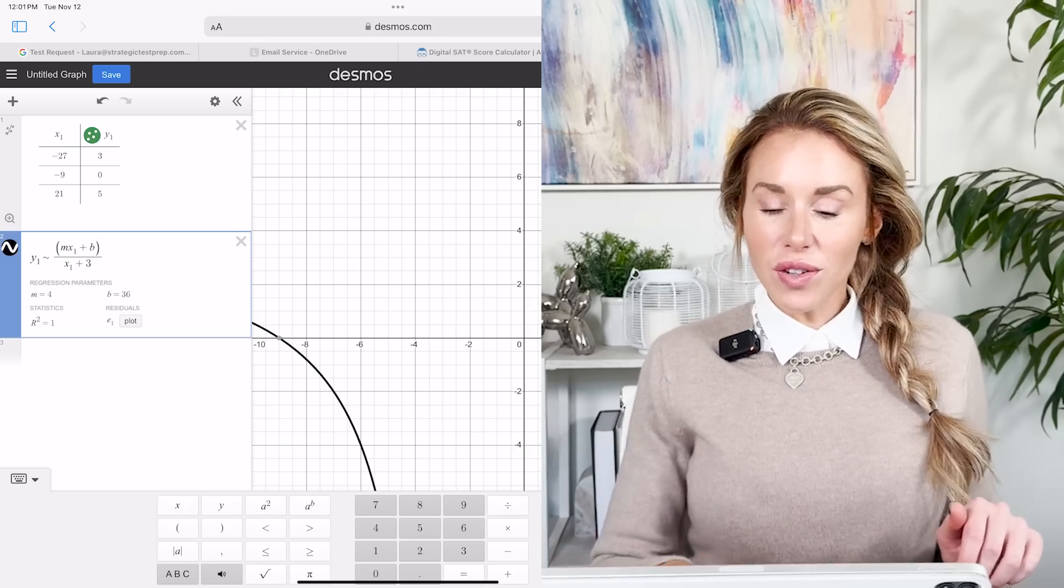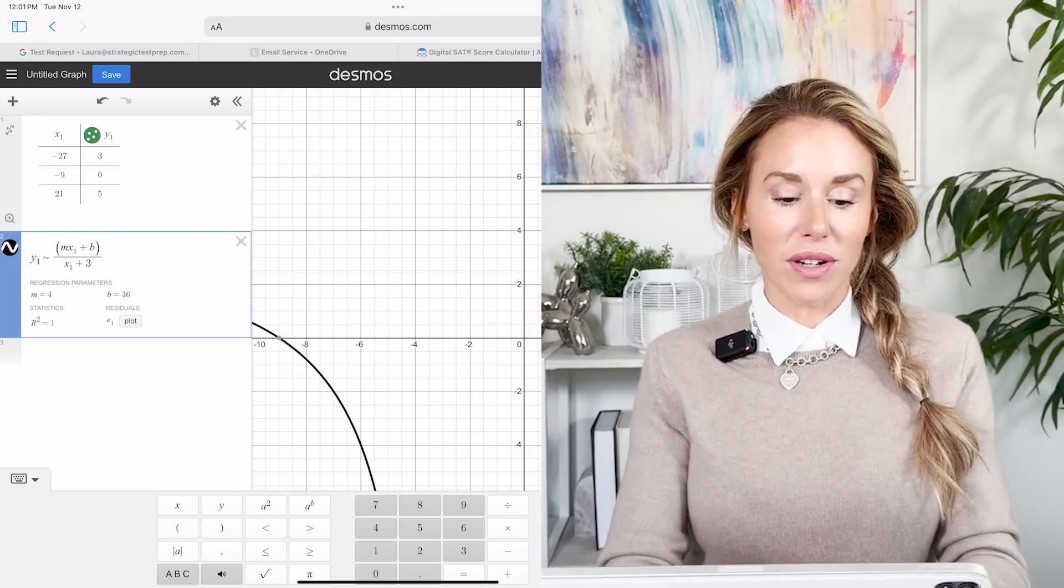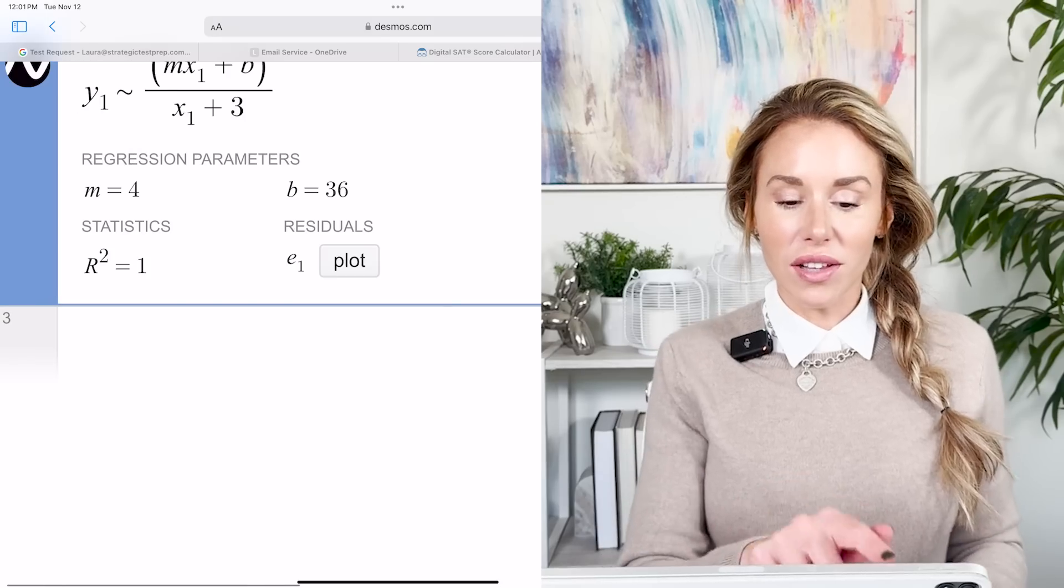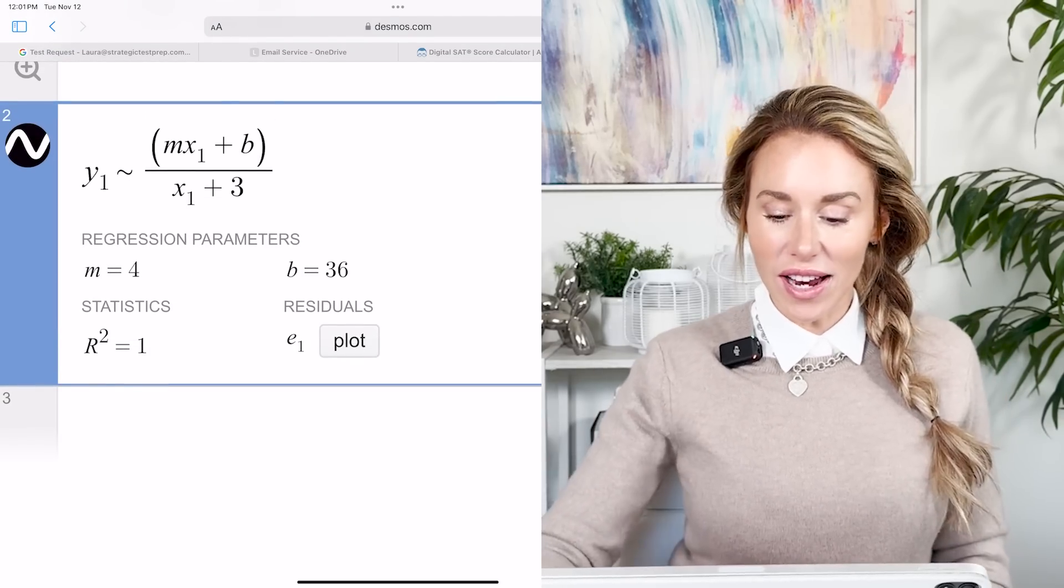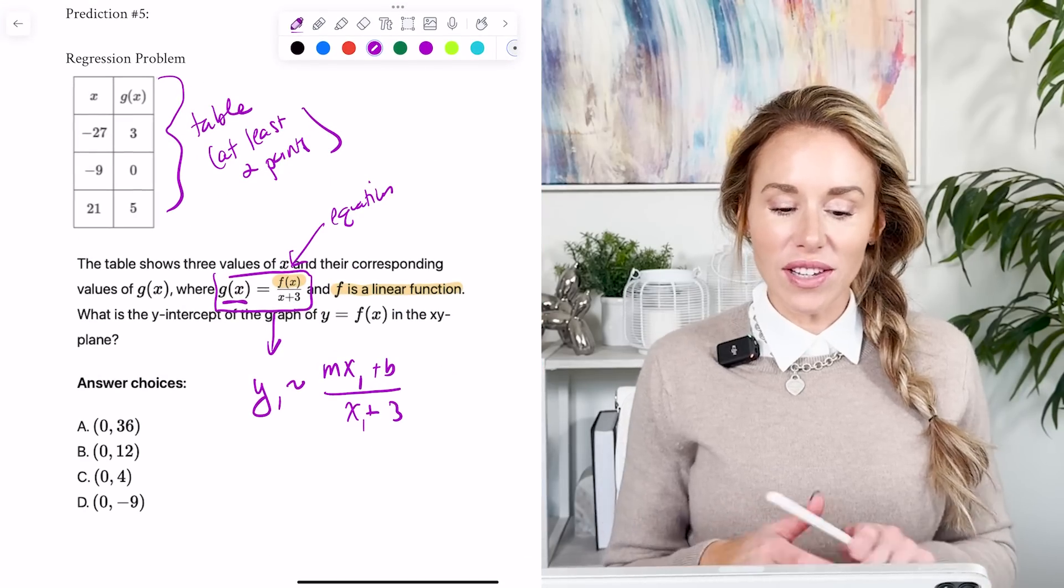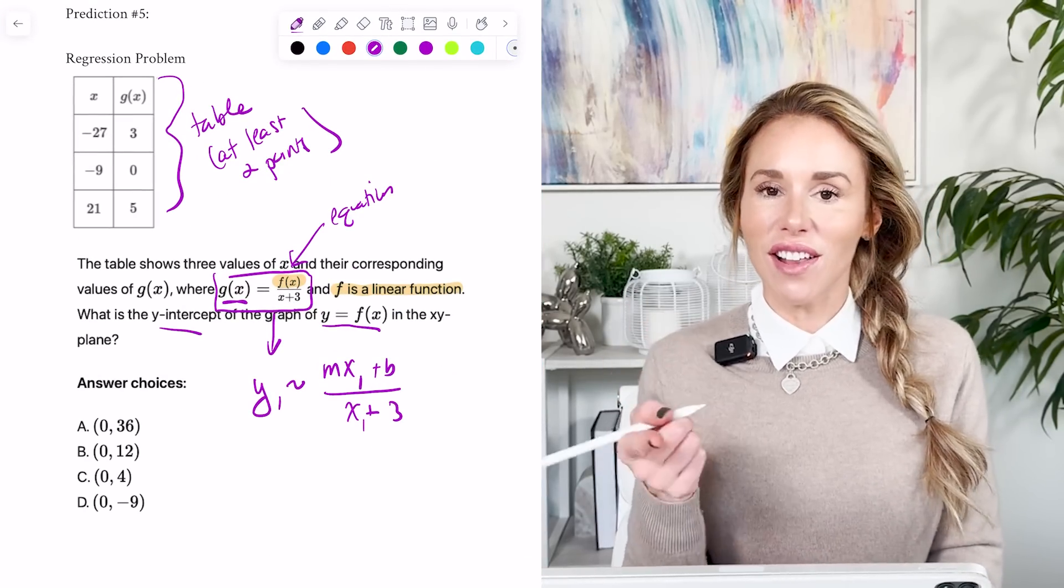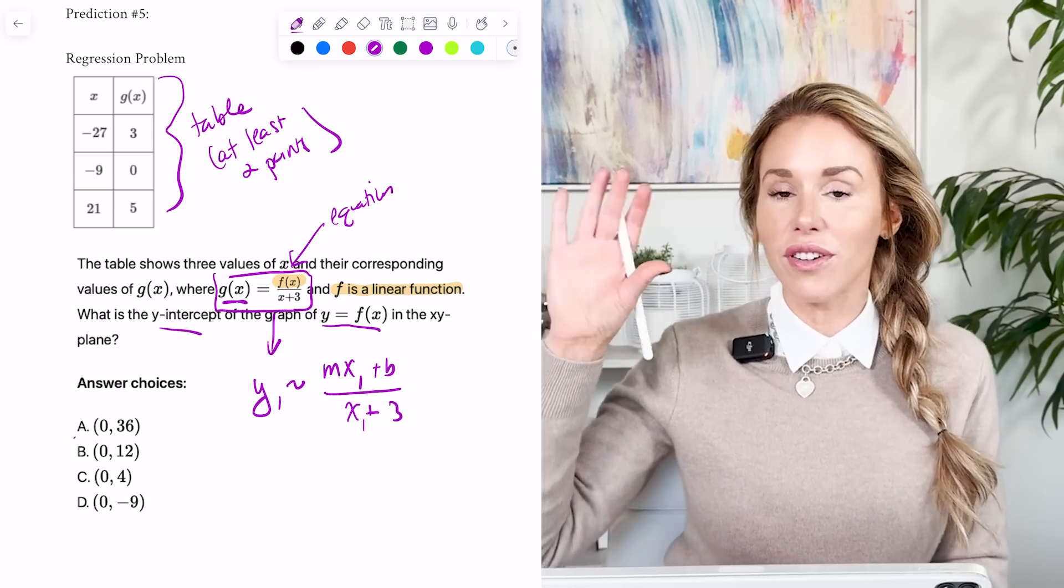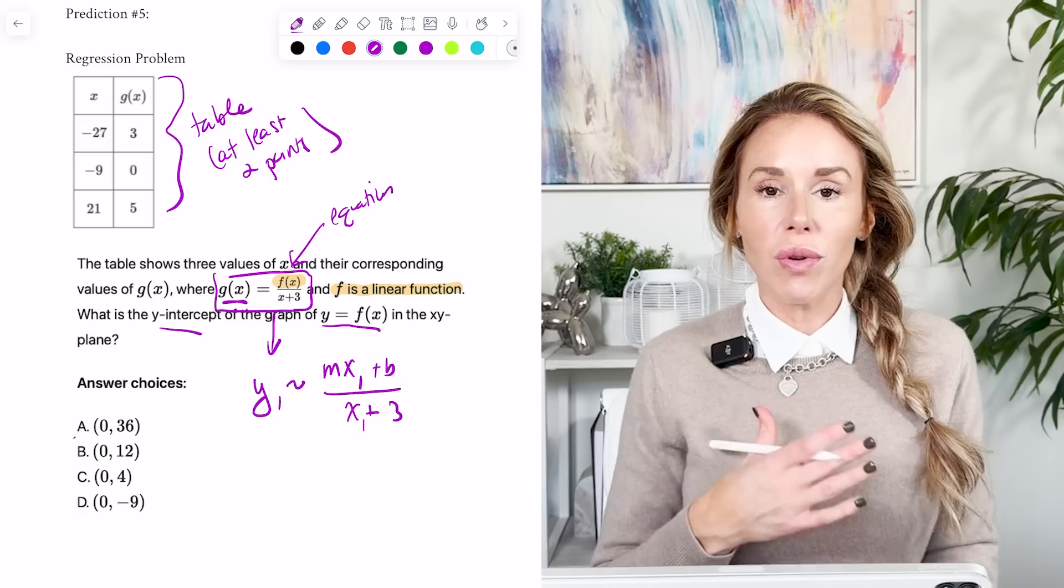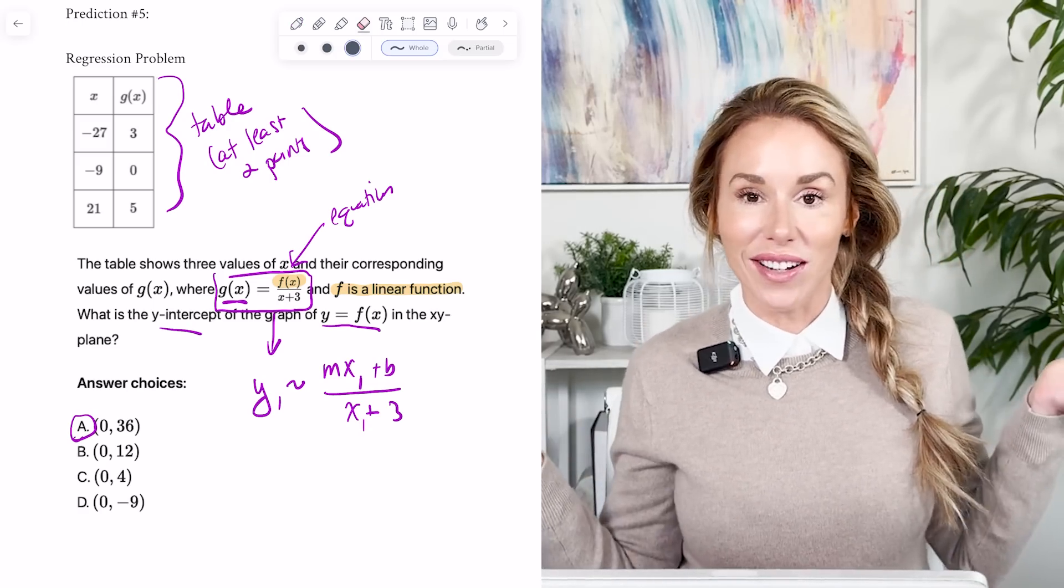Okay. So as you can see, they've given us the graph and they've also given us our parameters. So if you look at this, they said the slope of the line is four and the Y intercept of the line is 36. So when they say, what is the Y intercept of the line? Because remember F of X is the line. They don't want the Y intercept of G of X. So don't look at the graph because that's G of X. They just want the Y intercept of the line. B was 36 according to Desmos and you're done.